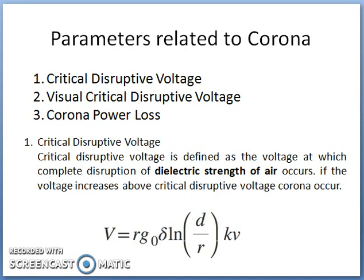We have seen what is the phenomenon of corona and when it appears around the conductor. The corona effect takes place when the applied voltage exceeds a particular value called the critical disruptive voltage. As this voltage increases, the glow and hissing noise also increases. If the voltage increases up to the breakdown value of the air, then flashover takes place.